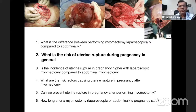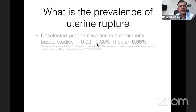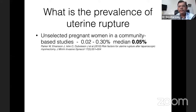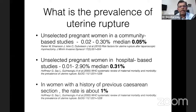The next question: what is the risk of uterine rupture during pregnancy in general? In an unselected pregnant woman in a community-based study, the rate of uterine rupture is between 0.02 to 0.30% with a median of 0.05%. In a hospital-based study, the rate is 0.01 to 2.90% with a median of 0.31%. In women with a history of previous caesarean section, the rate is about 1%. This is our reference when comparing with myomectomy outcomes.